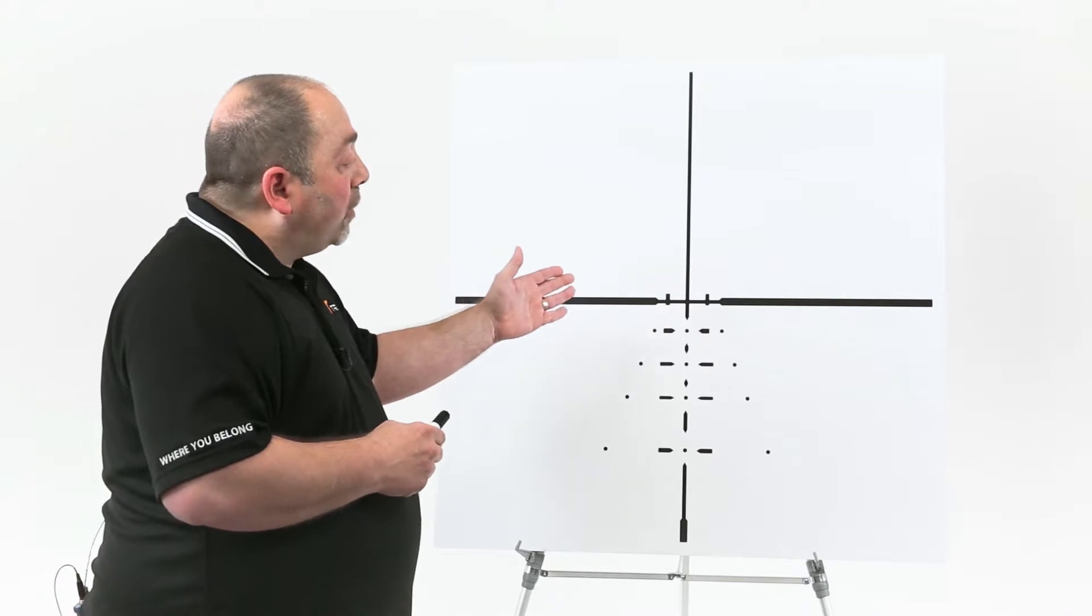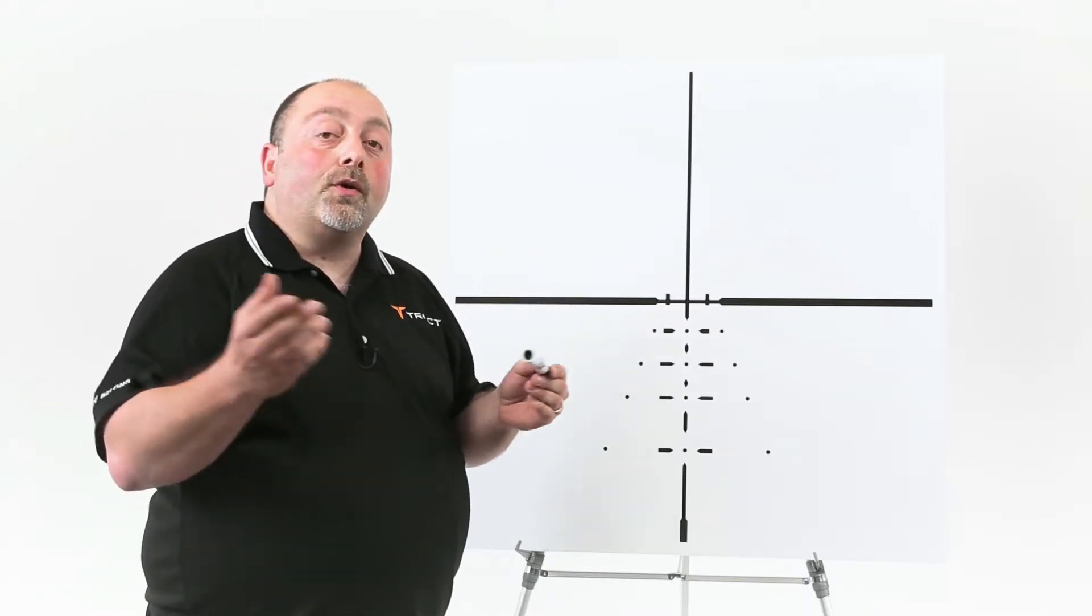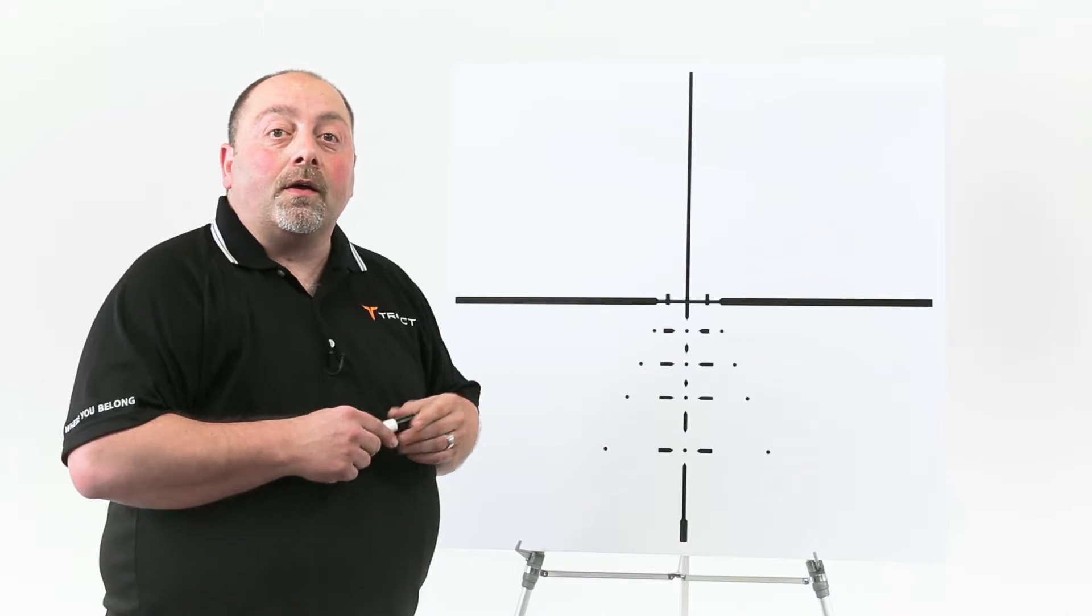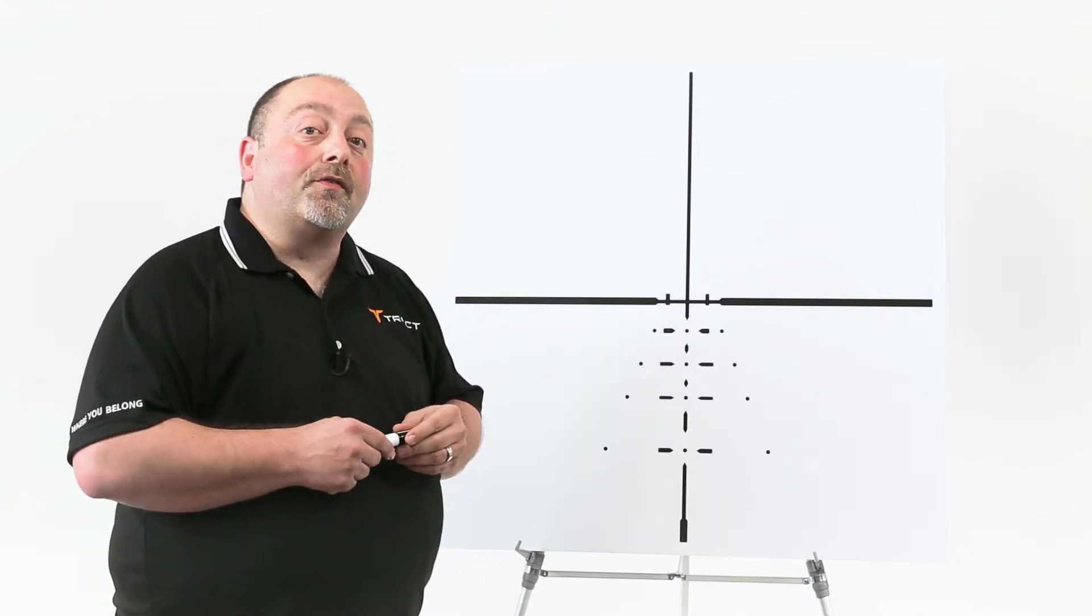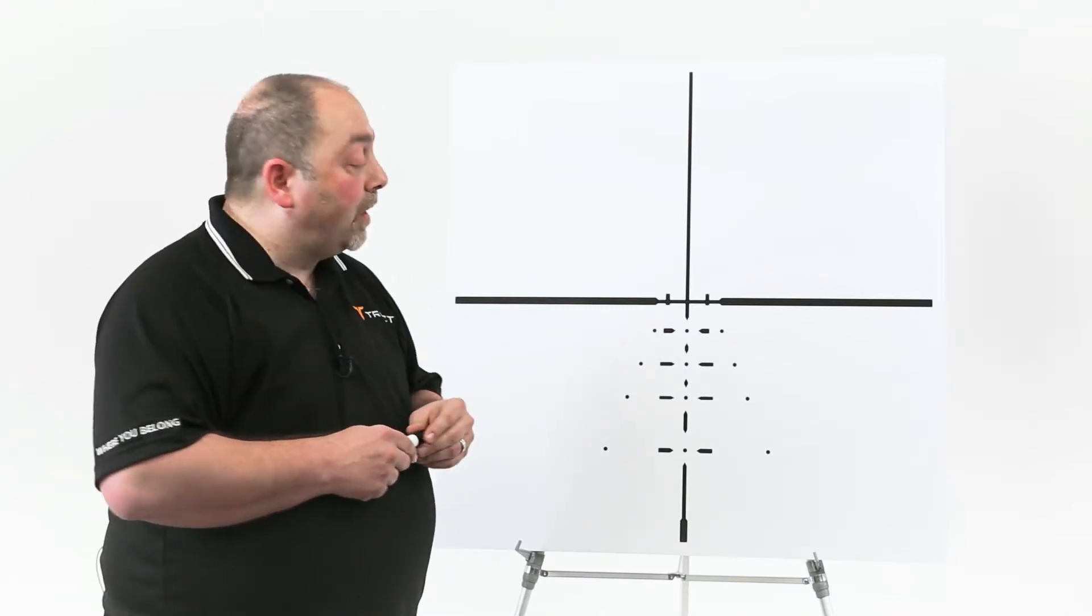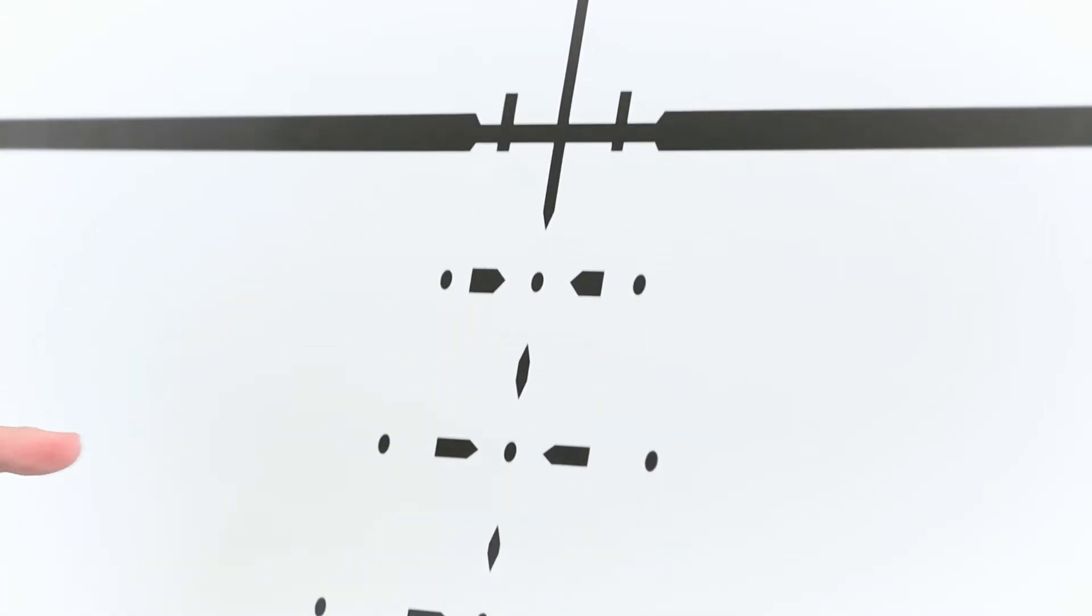The way this reticle was designed is you can utilize it for a multitude of cartridges. If you're shooting a cartridge in the neighborhood of 2,800 feet per second you would zero the cartridge at 100 yards and then the dots would represent 2, 3, 4, and 500 yards respectively.